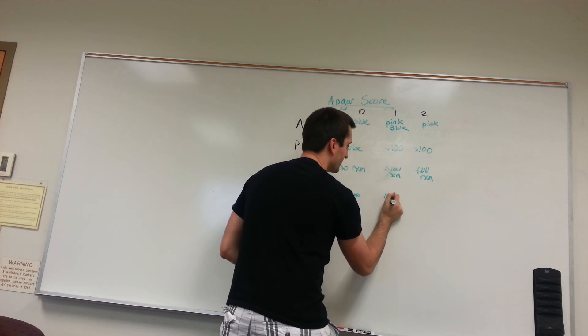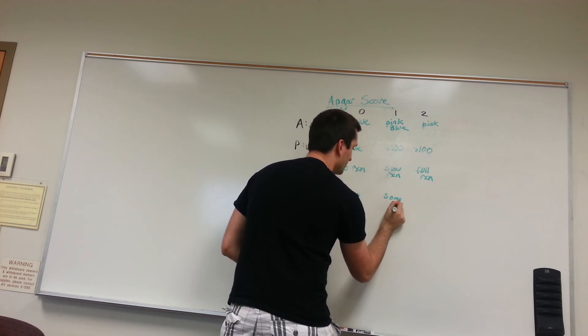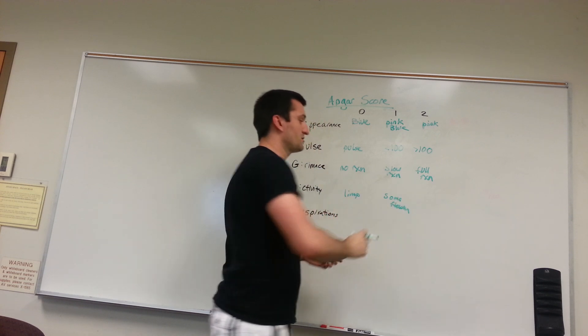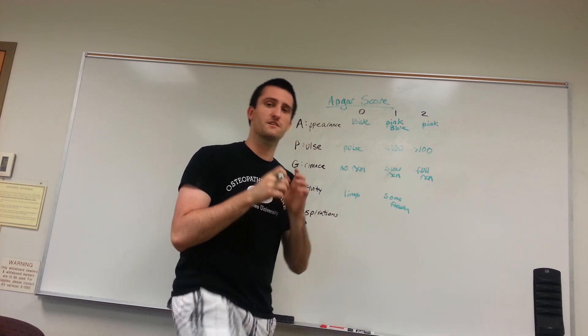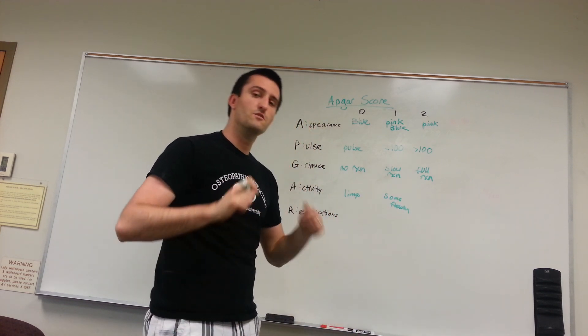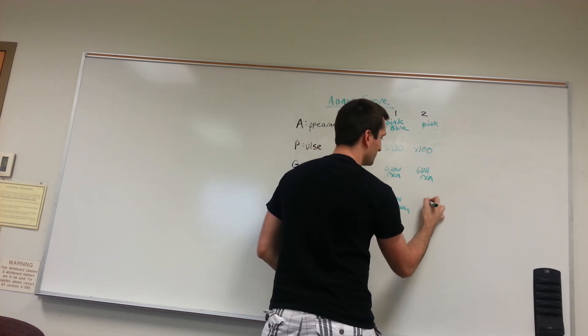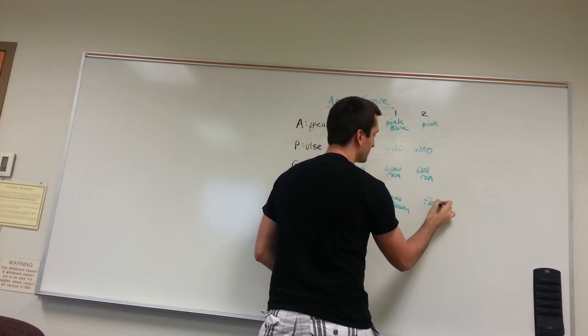So, some flexion. Anything of strong flexion. If they're flexing all their extremities and they're moving and they're flexing, then you're going to give them a score of 2. So, flexion. That's going to be your key.